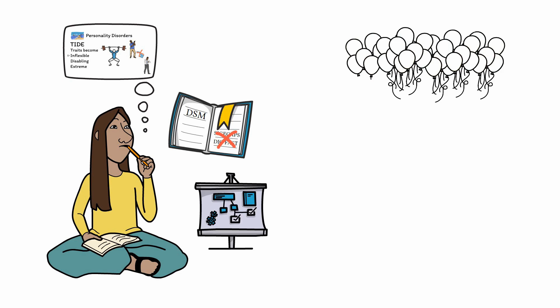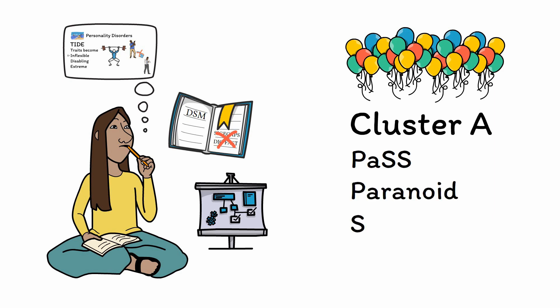Going off the personality disorder party mnemonic from the last video, we'll focus first on cluster A, which is the group that will pass on the party. This will help you remember that cluster A consists of paranoid, schizoid, and schizotypal personality disorders.